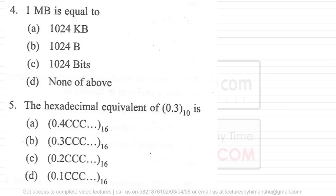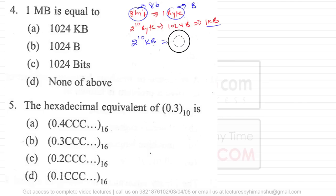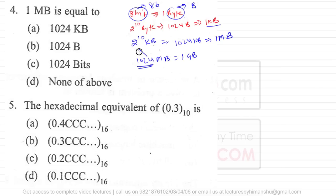The next question asks what 1 MB is equivalent to. We know 8 bits make 1 byte. 2 raised to power 10 bytes (1024 bytes) makes 1 kilobyte. Note that a bit is represented by a lowercase 'b' and a byte by uppercase 'B'. Then 2 raised to power 10 kilobytes equals 1024 kilobytes, which equals 1 megabyte. And 1024 megabytes equals 1 gigabyte.